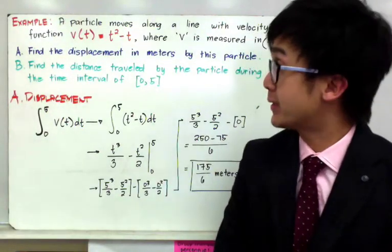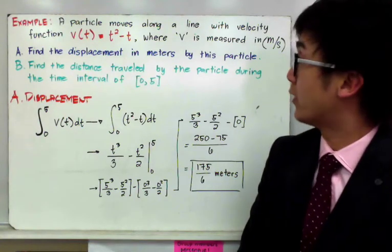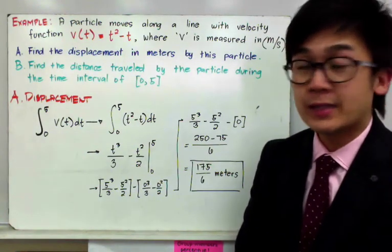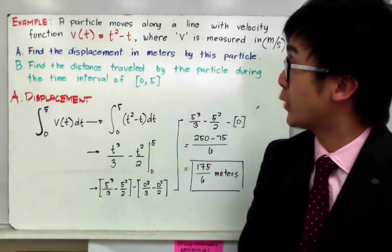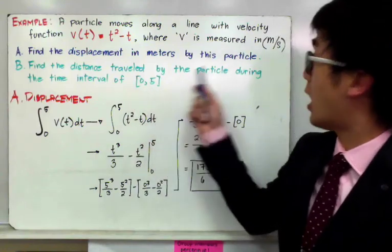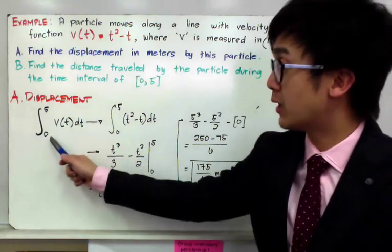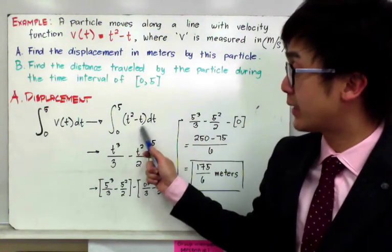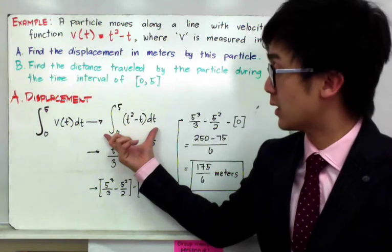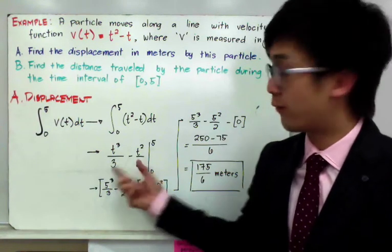For our first example, a particle moves along a line with velocity function v(t) = t² − t, where v is measured in meters per second. The first question asks us to find the displacement in meters. To find the displacement of this moving particle in a straight line, we find the definite integral of v(t) dt from 0 to 5. We set up the integral of (t² − t) dt from 0 to 5, and find the antiderivative: t³/3 − t²/2, evaluated from 0 to 5.